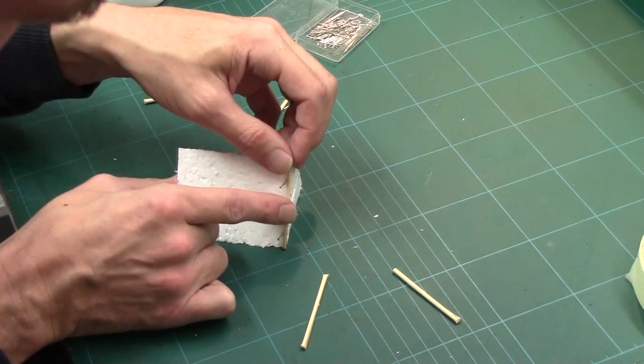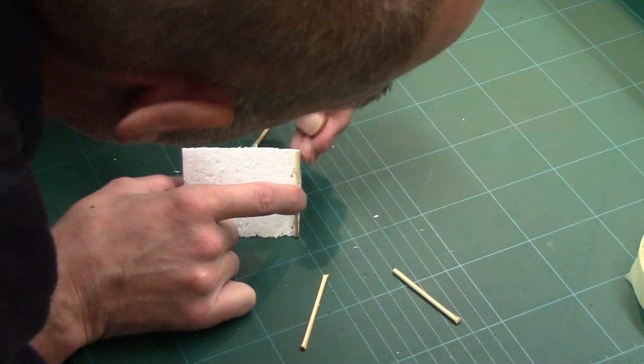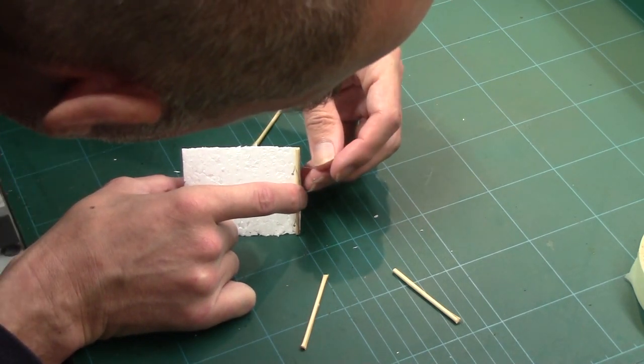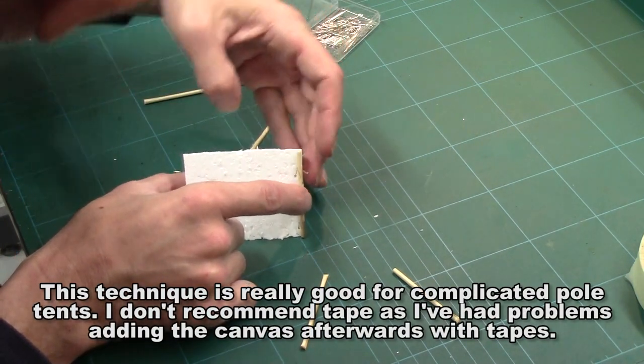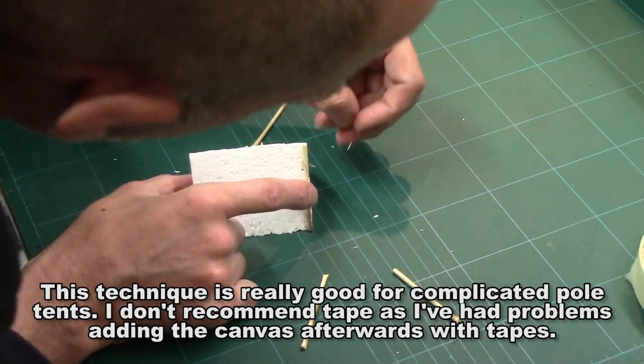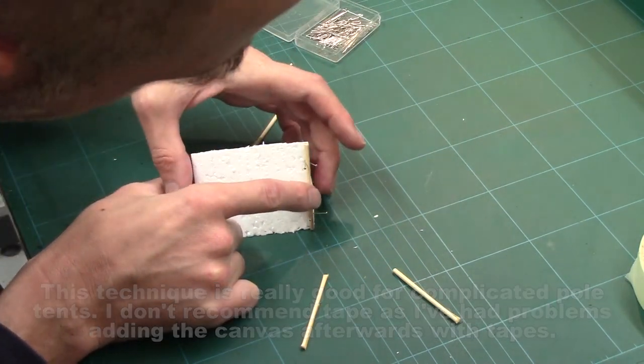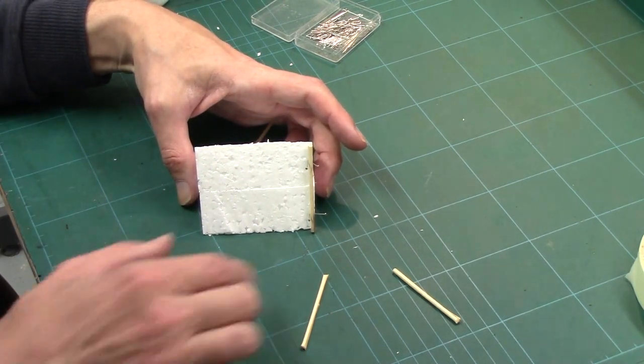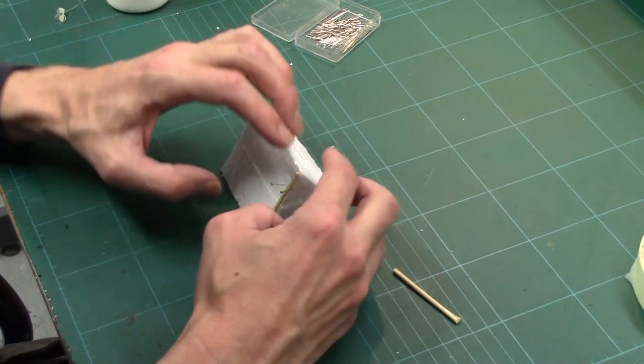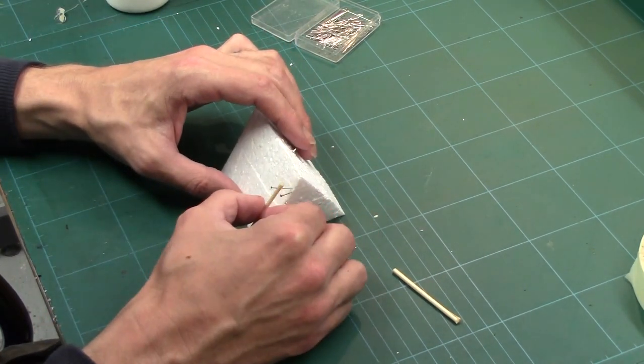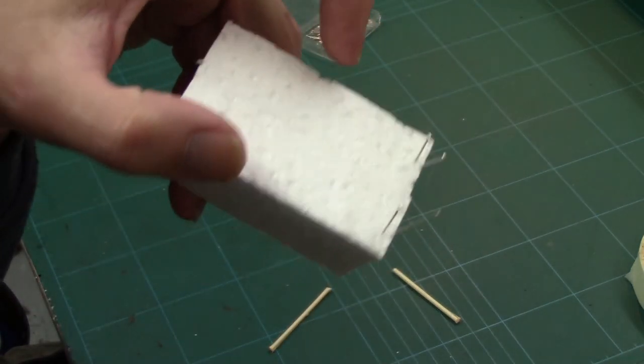And then what I need to do, and this is a little bit fiddly for camera, but I'm going to get the pins again. And at the other side, I'm going to push them in there. And then one at the bottom. And then immediately you can see what I'm doing, these pins are going to hold this in place nice and steady while I drop my glue on.